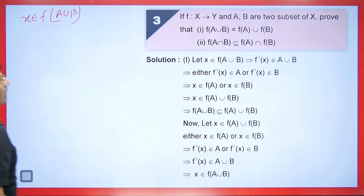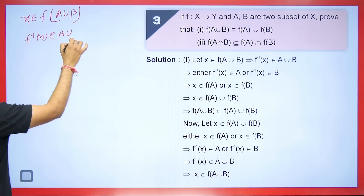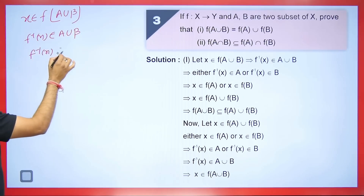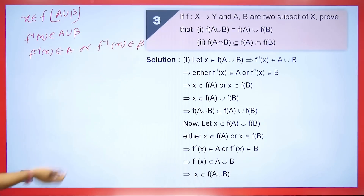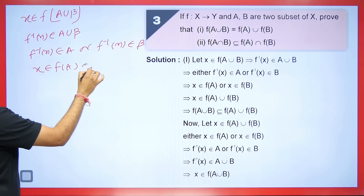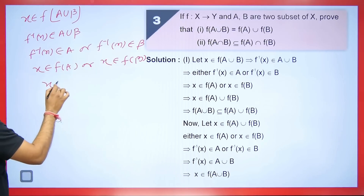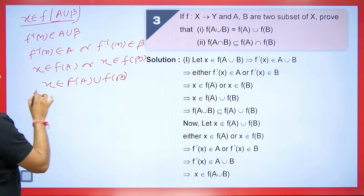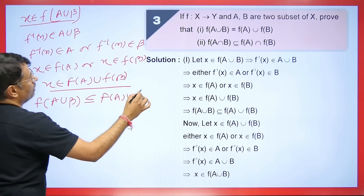If x ∈ F(A ∪ B), then F⁻¹(x) ∈ A ∪ B, which means F⁻¹(x) belongs to A or F⁻¹(x) belongs to B. If F⁻¹(x) ∈ A, then x ∈ F(A). If F⁻¹(x) ∈ B, then x ∈ F(B). Therefore x ∈ F(A) ∪ F(B), proving F(A ∪ B) ⊆ F(A) ∪ F(B).